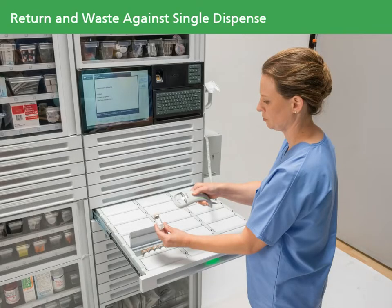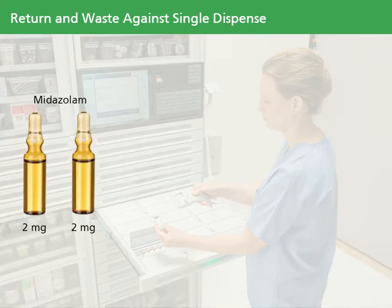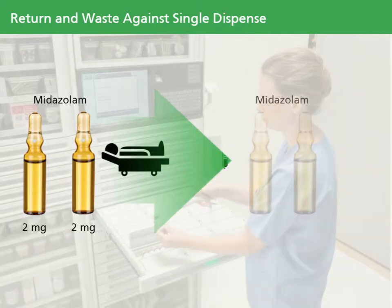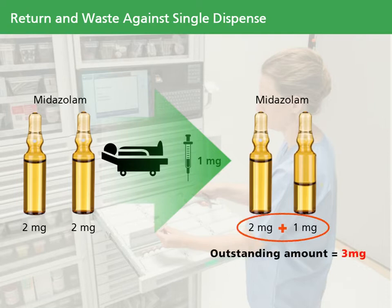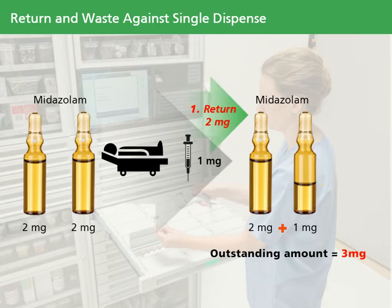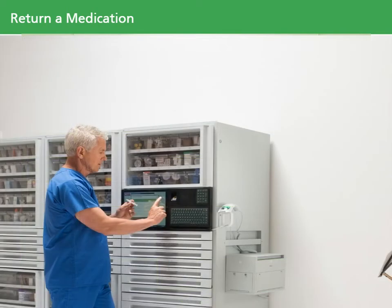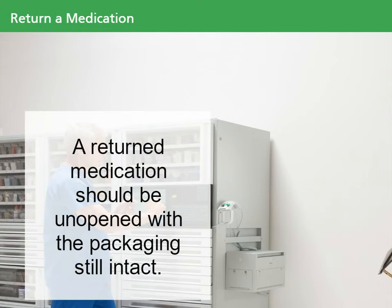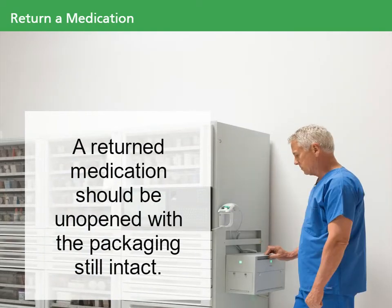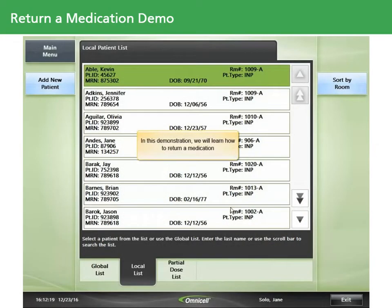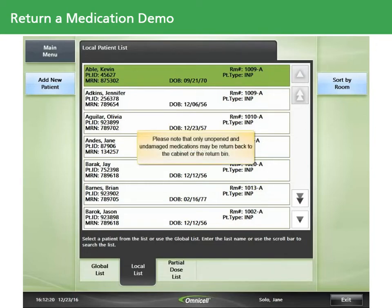If you remove two doses for the same patient in a single dispense — for example, two vials of midazolam 2 milligrams — and you only give your patient 1 milligram, you'll need to document what happened with the remaining 3 milligrams. Returns must always be completed first. Return 1 vial of midazolam 2 milligrams and waste the remaining 1 milligram to close the PMA. During waste, you'll be required to enter the actual administered amount. Depending on your facility's policy, you may need to return medications to the external return bin or back to a cabinet. A returned medication should be unopened with the packaging still intact.